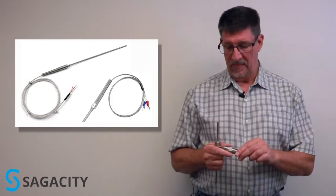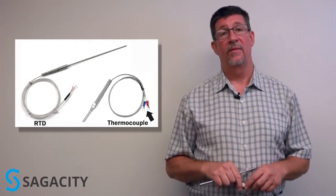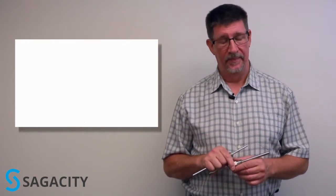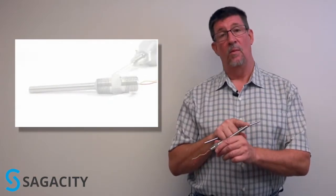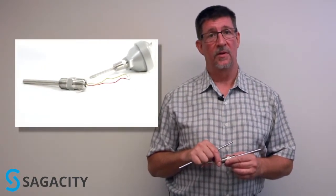A thermocouple will have two wires out the back. An RTD will typically have three or more wires out the back. That's a good way to tell the two of them apart. A thermocouple will have a weld end and we're welding two dissimilar metals together to generate a voltage output.